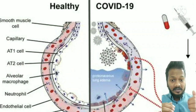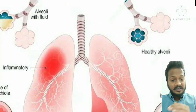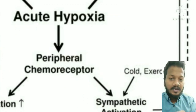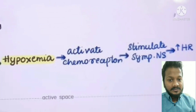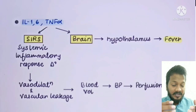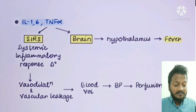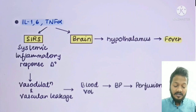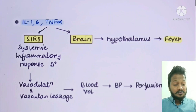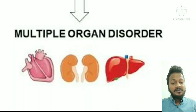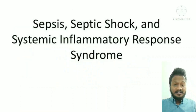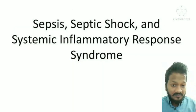Pulmonary edema causes obstruction of gas exchange leading to hypoxemia. Hypoxemia triggers peripheral chemoreceptors, which stimulate the sympathetic system — increasing heart rate to compensate. These cytokines enter the bloodstream, reach the brain, and stimulate the hypothalamus causing fever. The effect of cytokines on blood vessels is vasodilation and increased vascular permeability, causing a drop in blood pressure — organs don't get enough perfusion — leading to multi-organ failure, sepsis, and systemic inflammatory syndrome.